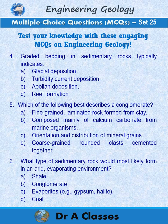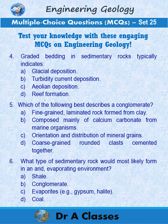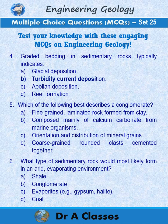Question 6. What type of sedimentary rocks would most likely form in an arid evaporating environment? A. Shale. B. Conglomerate. C. Evaporites, e.g. gypsum, halite. D. Coal.